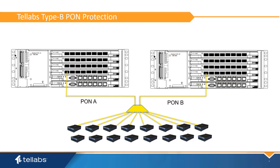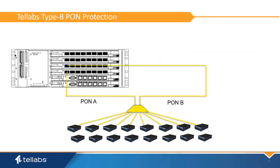Inter-OLT Pond Protection is when Type B Pond Protection is implemented on two ports on different OLTs. This is the preferred configuration for reliability reasons and is the option recommended by TELLABS. Intra-OLT Pond Protection is a Pond Protection Group on two ports on different Pond cards within the same OLT. This is typically used for cost savings, but it should be noted that in this configuration some OLT hardware in the path is not redundant.